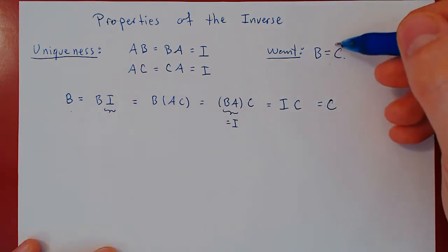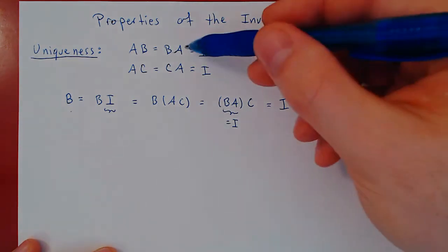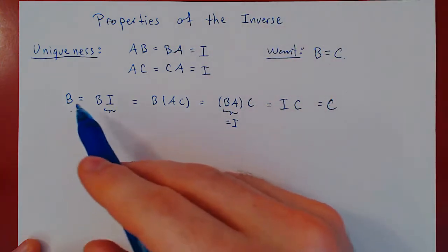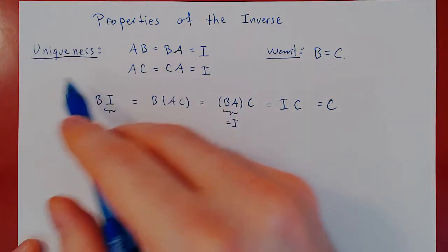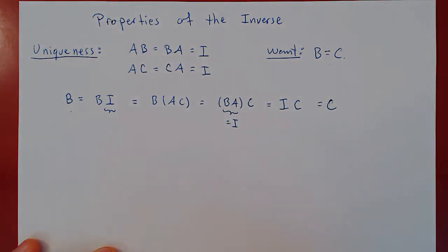So if you take any two inverses of the matrix A, they have to be equal to each other, which concludes our proof of uniqueness. Hence, if A has an inverse, its inverse is unique.